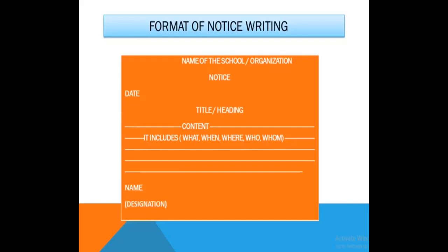In other words, five WH words you have to write: what, when, where, who, and whom. After that, you have to write the name — meaning the name of the person who is writing the notice — and after that, the designation of that person.